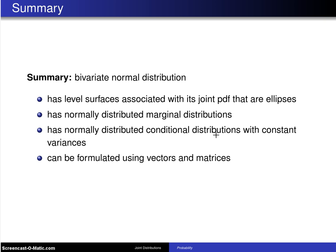Finally, the bivariate normal distribution can also be formulated using vectors and matrices and that allows us to generalize the bivariate normal distribution up to the multivariate normal distribution which will be seen at the end of the next section.